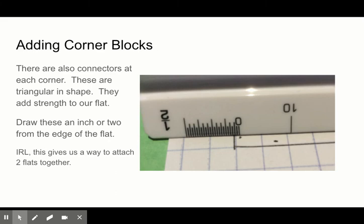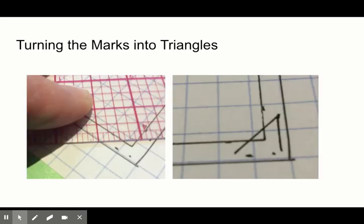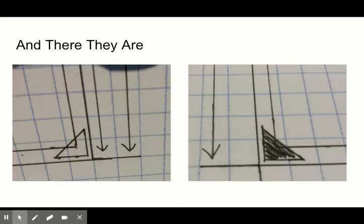And then we also need to add corner blocks which do the same thing but they're at the corners. These are triangular in shape and they're going to be again an inch or two from the edge of the flat so there's room to screw things together when we build it. We have to turn those marks into triangles because that's how they get built. And then we're going to shade those in as well.